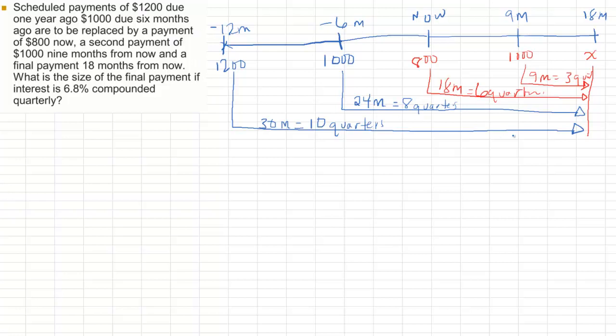What we need to do next is we equate them. The red, we'll call the red as the new payments, the replacement payments. And the blue as the original or old payments. So new equals old. We start with here. That's X. Plus the future value of $1,000 for 9 months. So that's $1,000 times 1 plus, and our interest rate is 6.8% divided by 4. Since it's compounded quarterly, that's 1.7% per quarter. So 1 plus 1.7%.